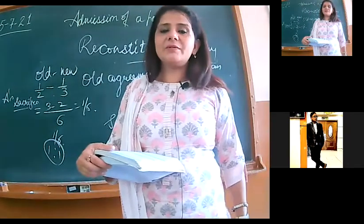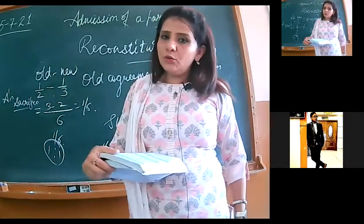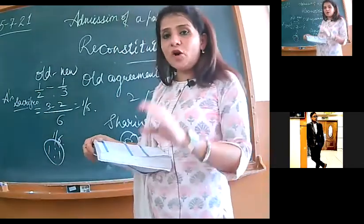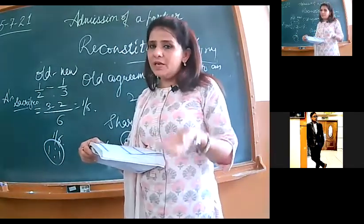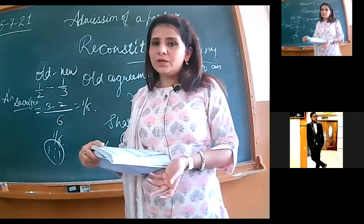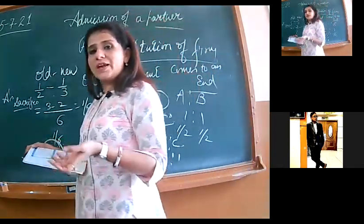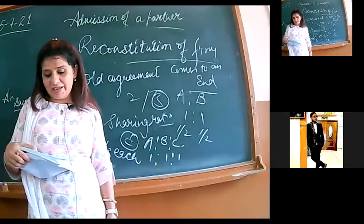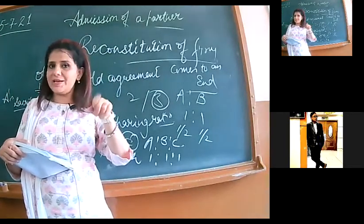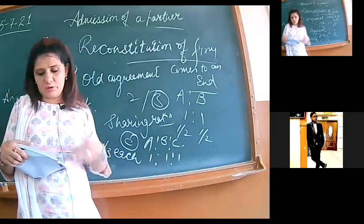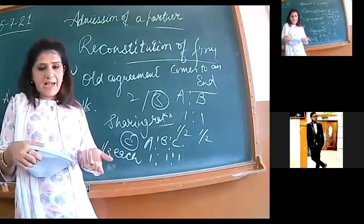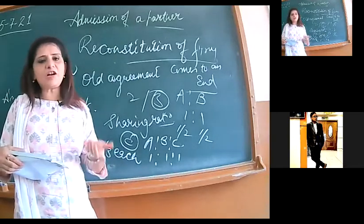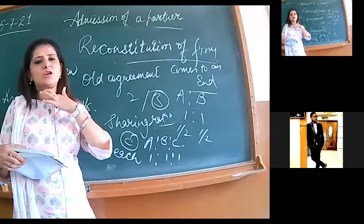When new partner's admission happens, we adjust the reserves that are in our balance sheet. When new partner's admission happens, we revalue assets and we also change the value of liabilities. This is also a separate topic of our chapter. When admission happens, we value the goodwill and we tell him, my firm's value is 20 lakh and you are coming for one-fifth share. We will be valuing the goodwill and asking the new partner to bring his share of goodwill in cash, basically in cash, but sometimes some other agreement can also be made.